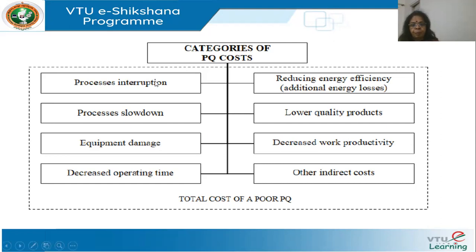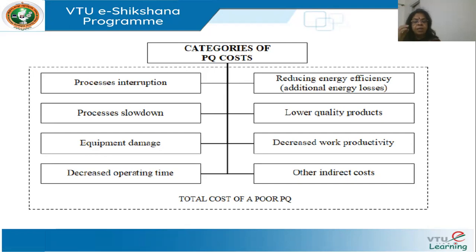The categories for cost analysis include: process interruption — if my motor drive has not operated for 10 minutes, what is the cost? Equipment damage, partial or complete — how do I calculate that cost? Decreased operating time, i.e., reduced life expectancy — not very easy to pin a cost on. Energy efficiency — when efficiency is reduced, losses increase and you pay higher electricity tariffs. Low quality products — very difficult to quantify how a 10% reduction in quality translates to financial loss.